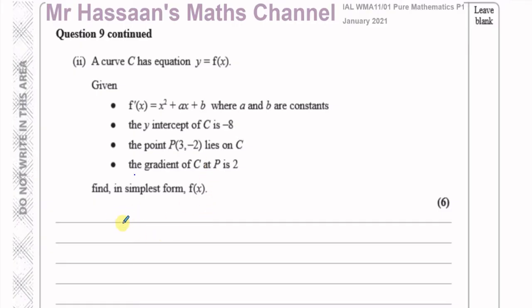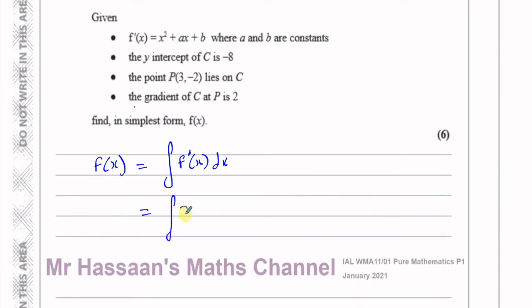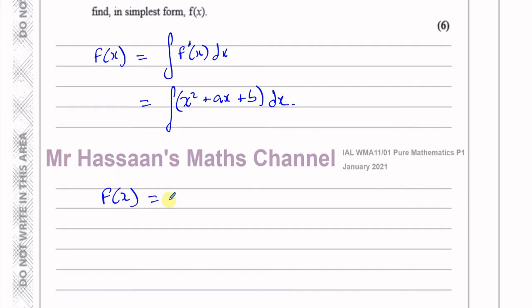Using these pieces of information, we have to find the equation of the curve — basically find the values of a, b, and the constant. So what we're going to do is use the fact that if I want to find f(x), I can take the gradient function f'(x) and integrate it. The integral of f'(x) gives f(x). So I'm going to integrate x squared plus ax plus b with respect to x.